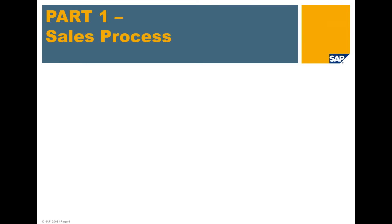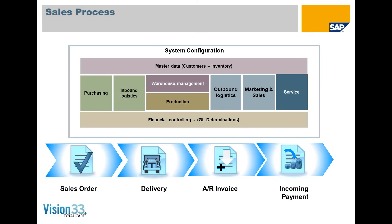As always, it's important to remember that system configuration really guides the effectiveness of the system. This primarily involves master data around customers, leads, and inventory, and of course the system rests on financial rules we refer to as GL determinations.